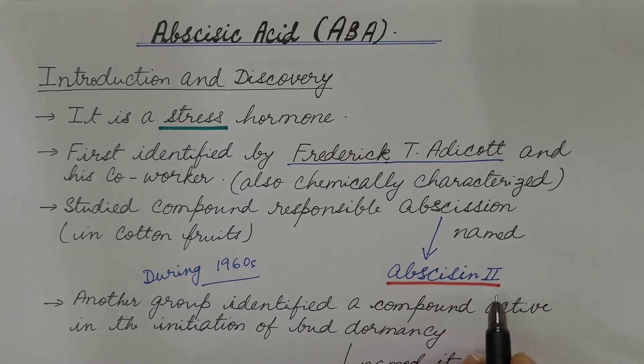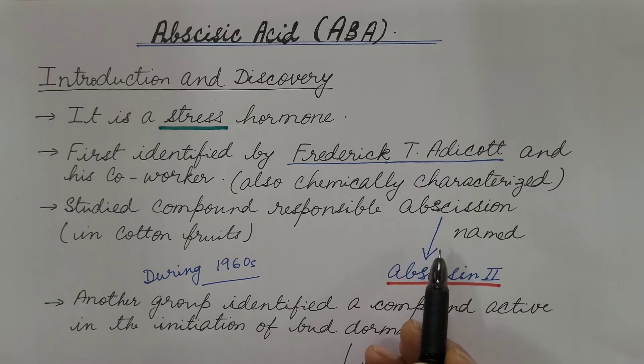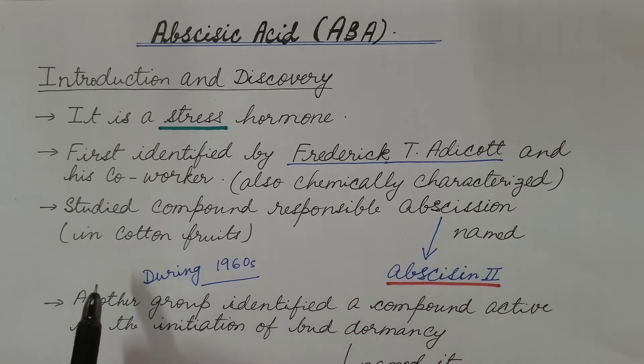Abscission is the natural detachment of parts of a plant, typically dead leaves and ripe fruits.